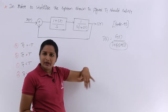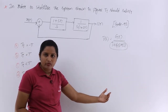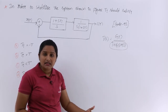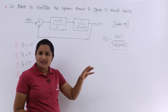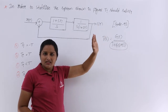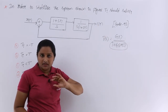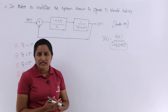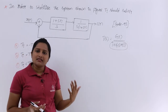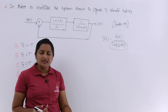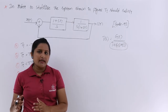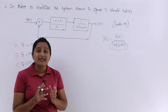In previous problems we already solved many problems related to stability analysis where we were given some characteristic equation to write the Routh array — that characteristic equation came from the denominator of the transfer function. Now here they did not give any characteristic equation, so we need to find it ourselves, write the Routh array, and determine the stability of the system.